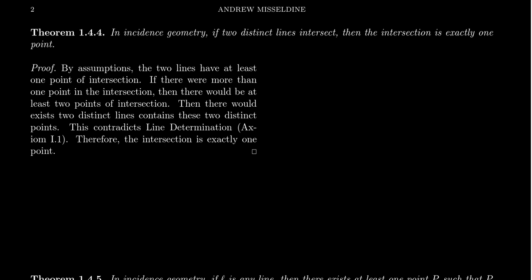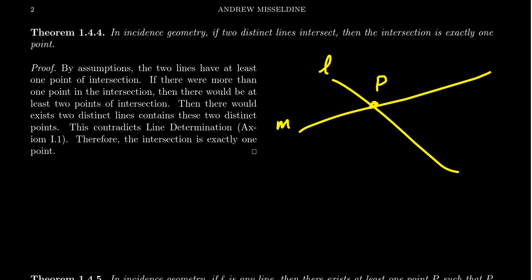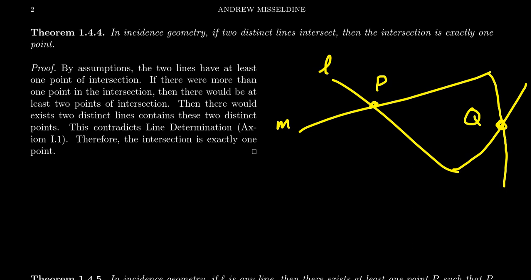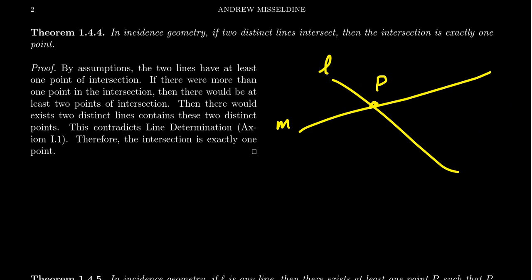This statement is essentially the contrapositive of the line determination axiom. By assumption, two lines have at least one point of intersection — call it P. We have our two lines L and M. If there were a second intersection point, call it Q, then we would have two lines determined by P and Q. But line determination says given any pair of points, there is a unique line incident to both. Having two lines contradicts axiom I1 — line determination — giving us a contradiction. So our assumption was wrong, and the intersection must always be unique.